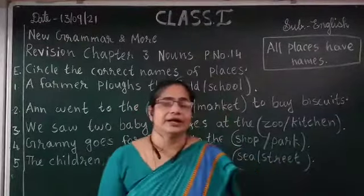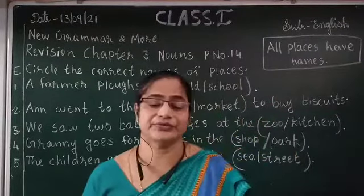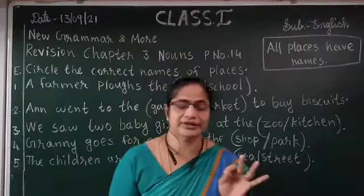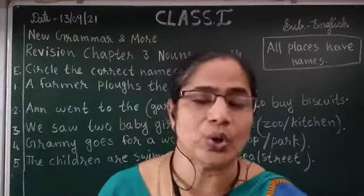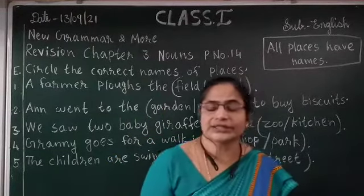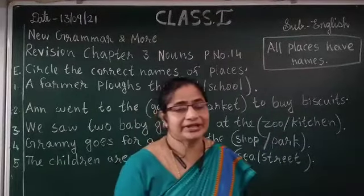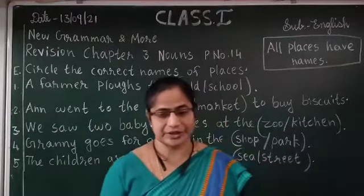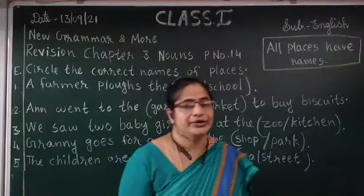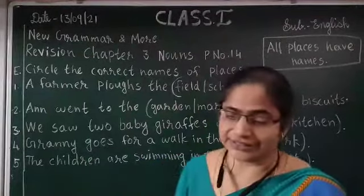Here, I have written: all places have names. For example — library, office, kitchen, garden, school, hospital, market, etc. These are the names of places, and each place has its own name. Now, the exercise is: how to circle the names of places.